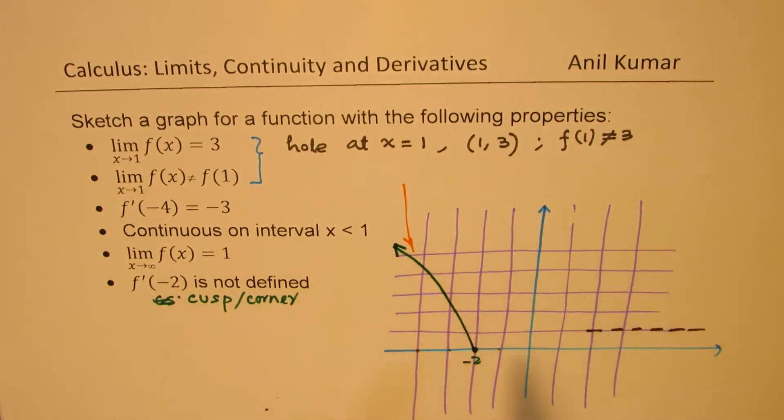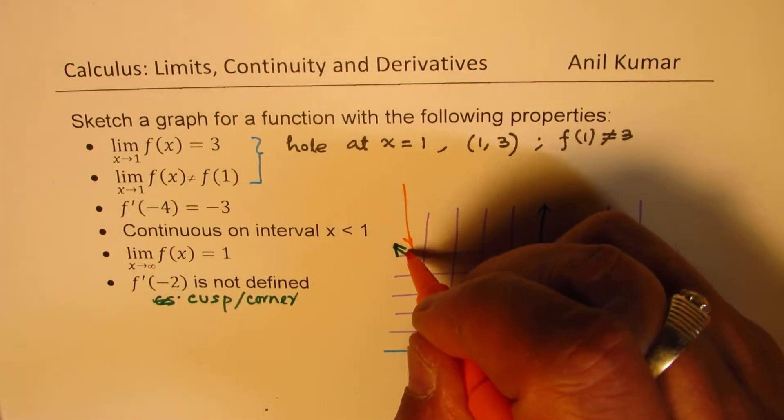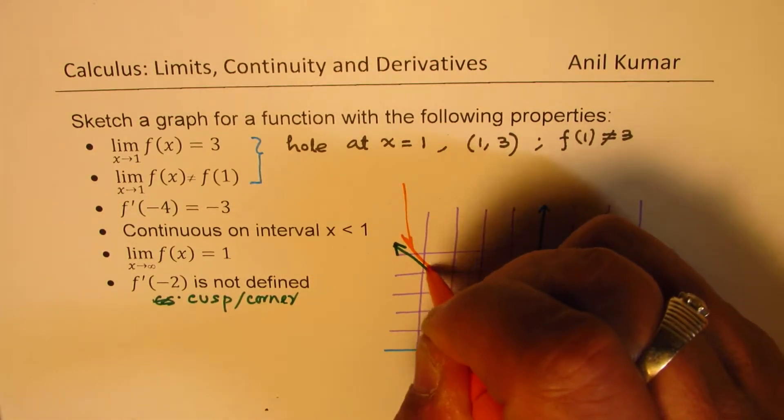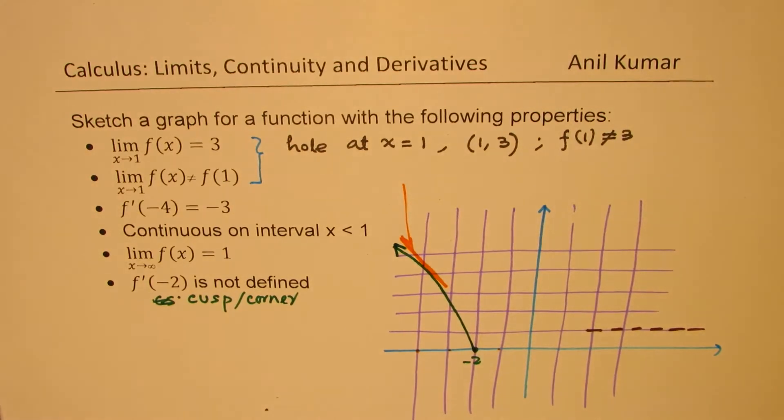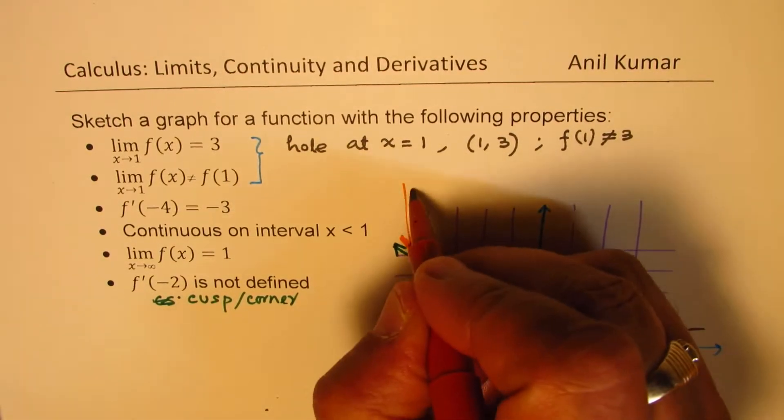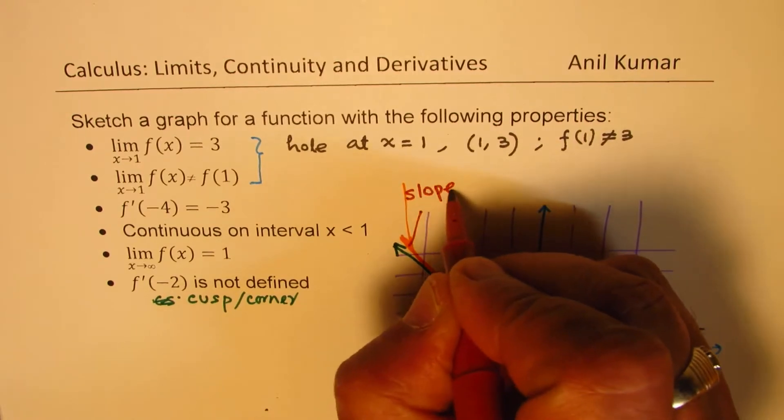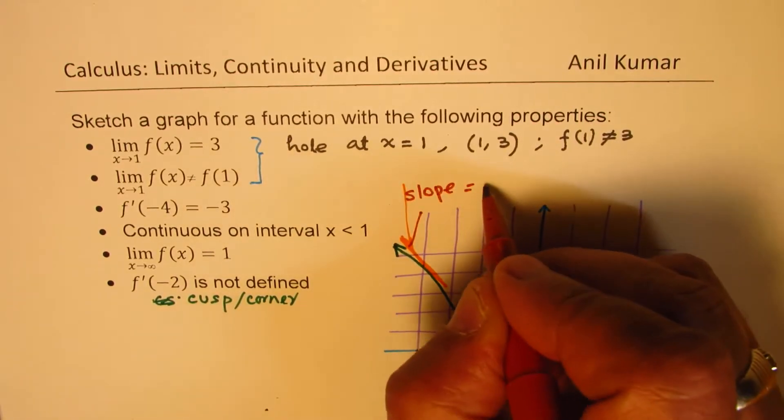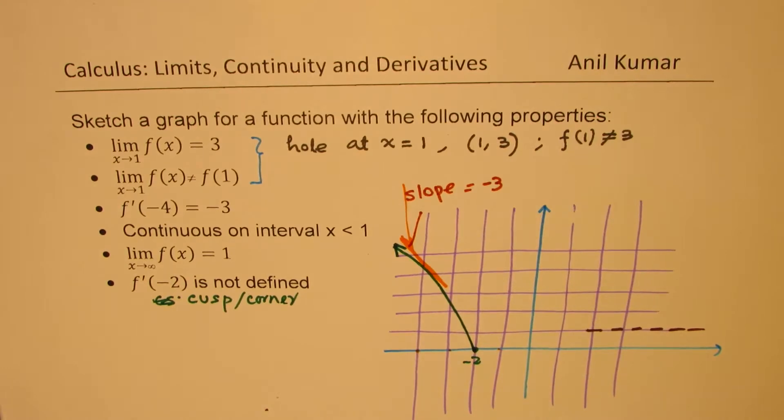So that means at minus 4, this particular slope here is, it doesn't look like it, but this particular slope we will say is equal to minus 3. You get the idea. It's a rough sketch.